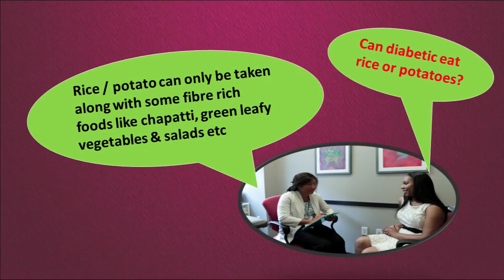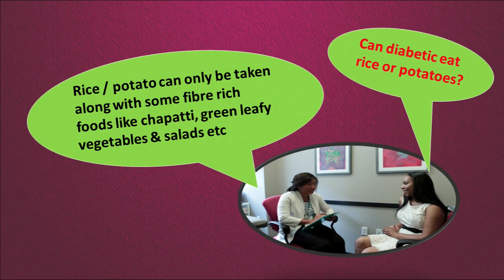Another belief: can diabetics eat rice or potato? Yes, they can eat with certain alterations. They should not eat rice alone — they can eat rice along with lots of pulses. For potato, they can eat it — not the fried one — but along with green leafy vegetables or salad. That is why diabetics are always suggested to include a balanced diet in each meal, meaning pulses, rice, and vegetables together, so they get the whole amount of protein, carbohydrate, and other nutrients.